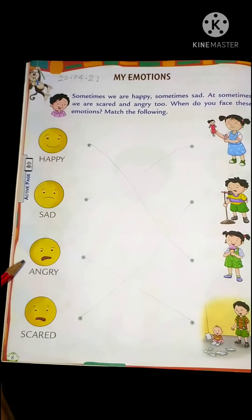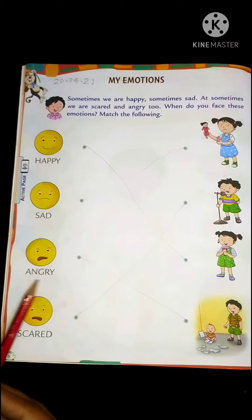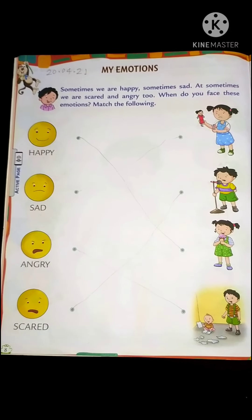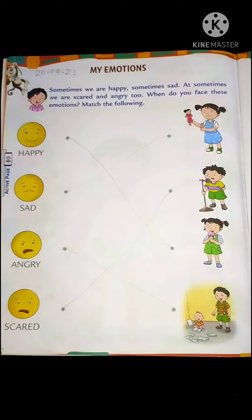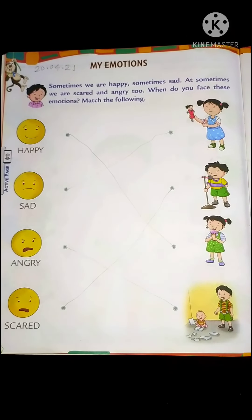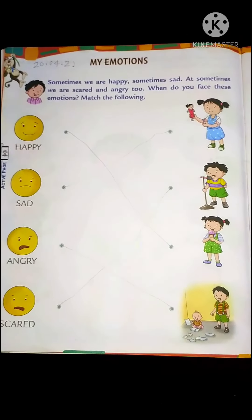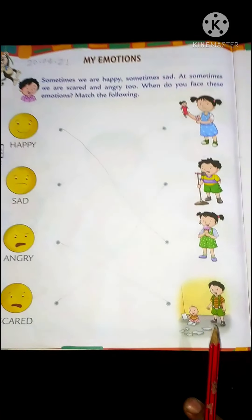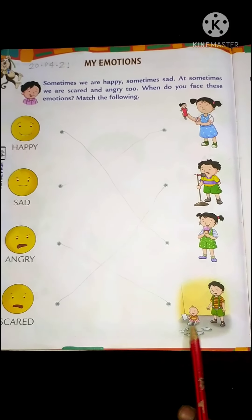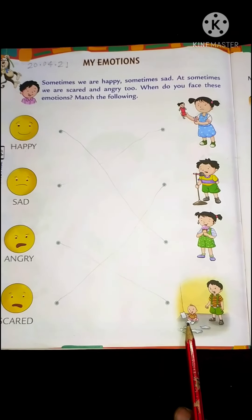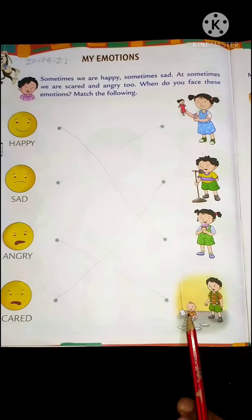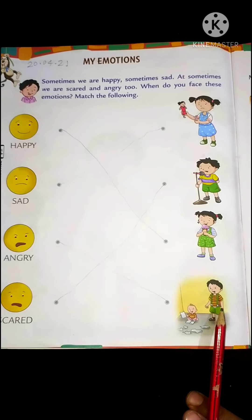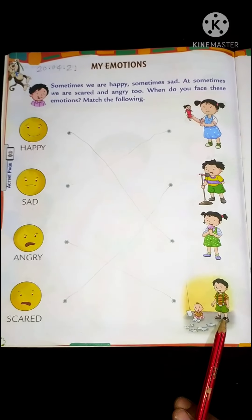Next, this face is angry. Angry means gussa — getting angry. When do you get angry? If someone teases you, if someone bothers you or takes your things, then you get angry. Look at this boy — his younger brother is tearing his copies. So he became angry. Yes, this is the angry face.